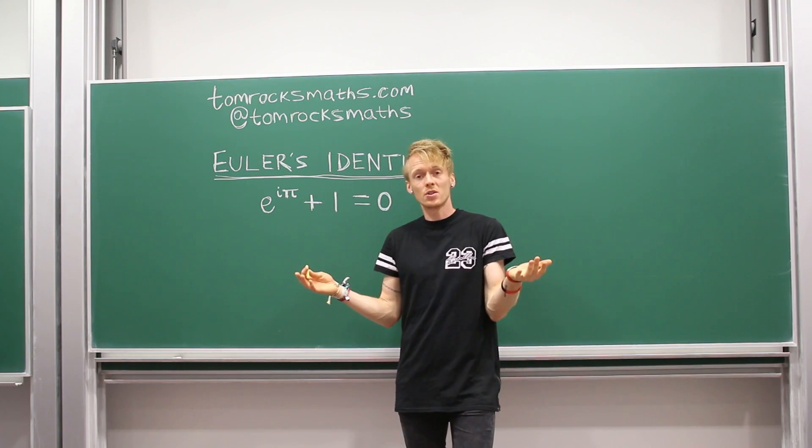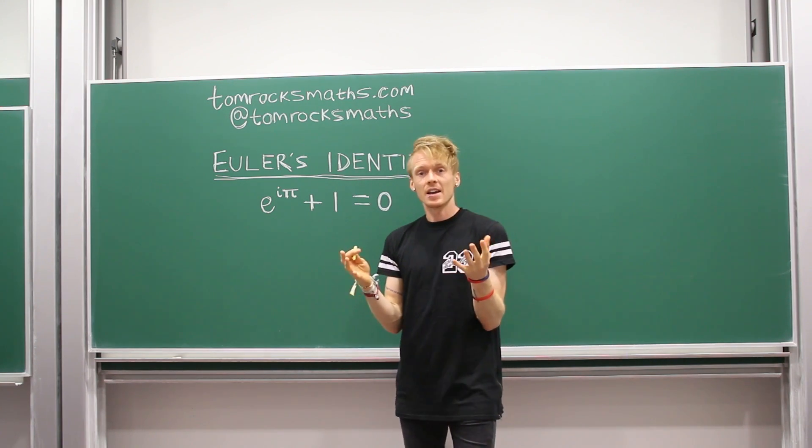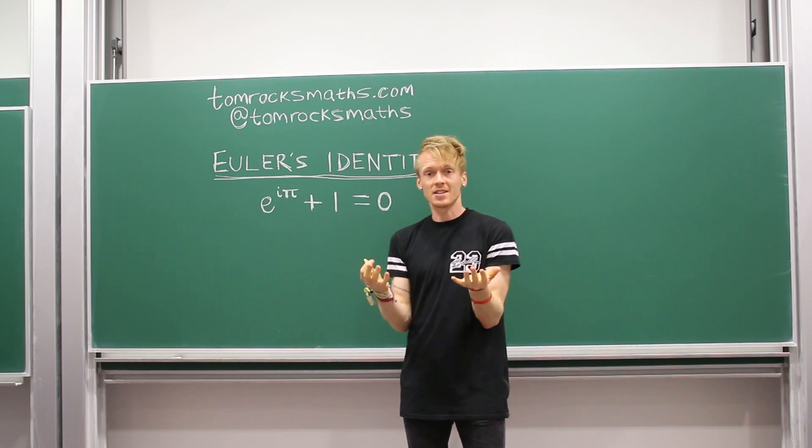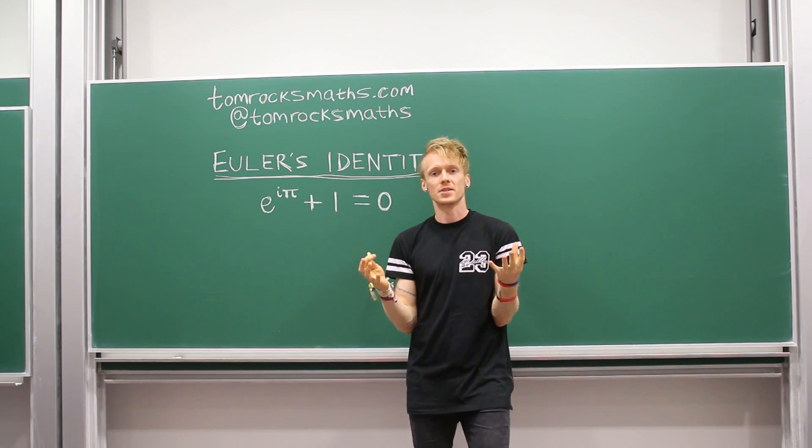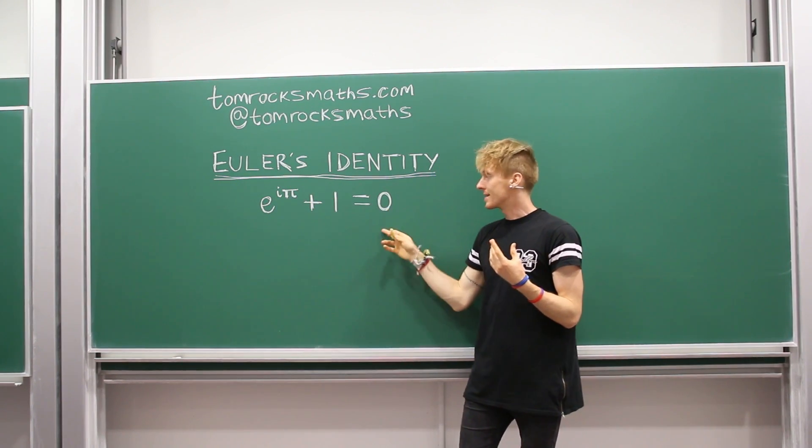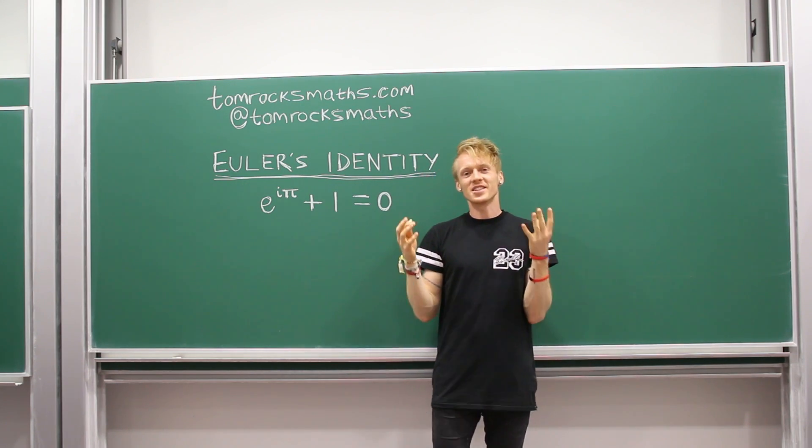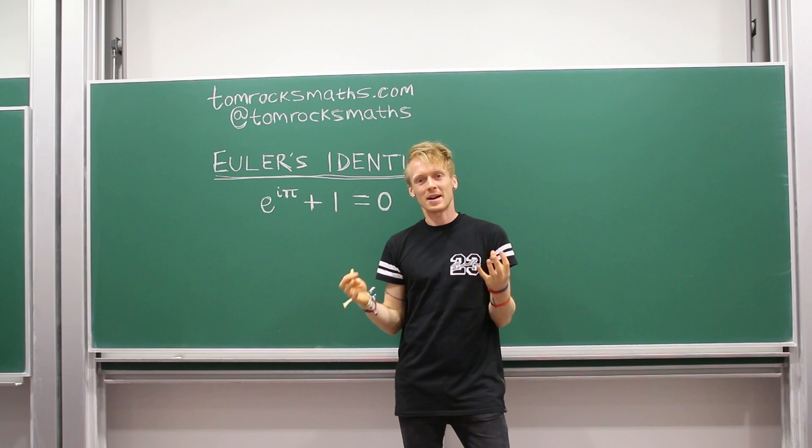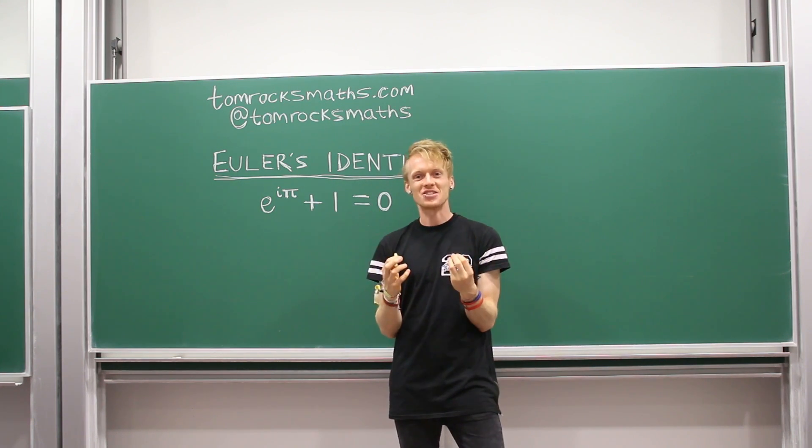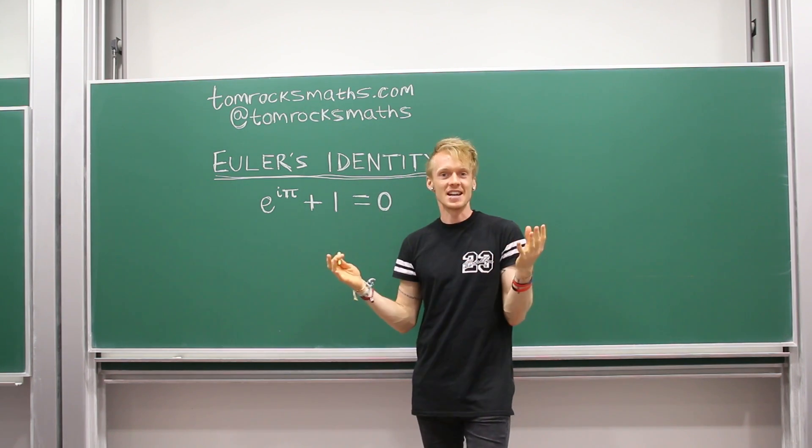So why is this equation so important as well as being beautiful? Well to start with, our first layer is the fact that the equation actually has five constants in there, five mathematical constants or five numbers. So you have e, you have i, pi, 1 and 0, and these five constants are pretty much the five most important mathematical constants in existence and they're all there in this one equation. It's just so elegant and so beautiful, it's just these five constants with a plus and an equals.